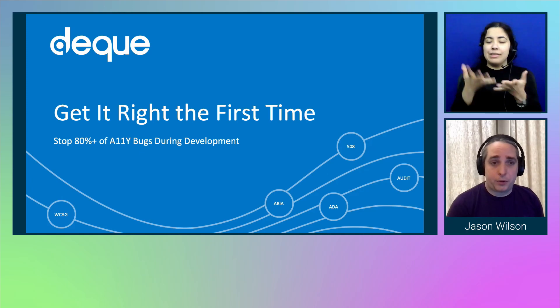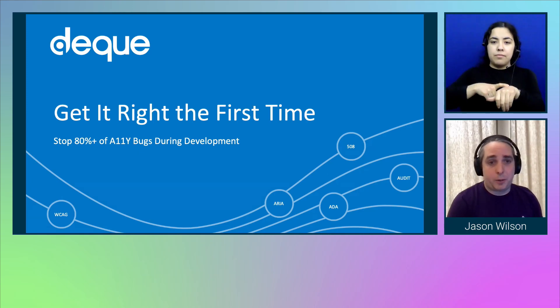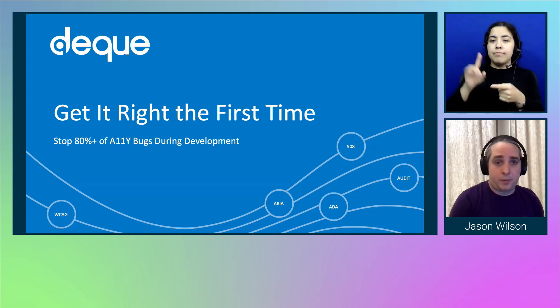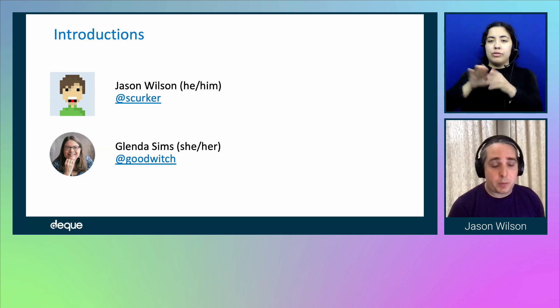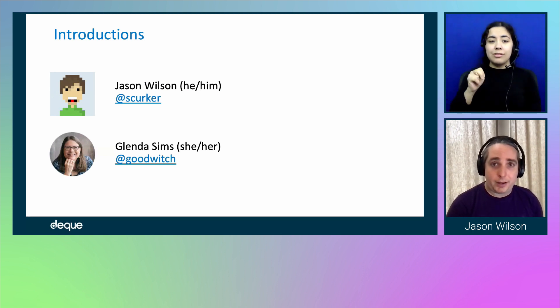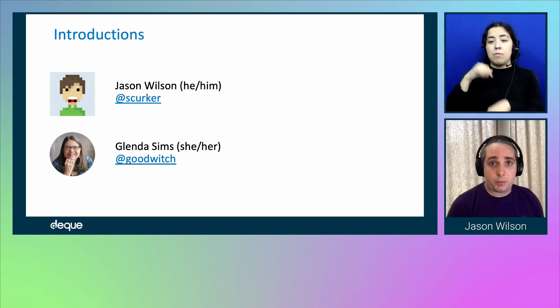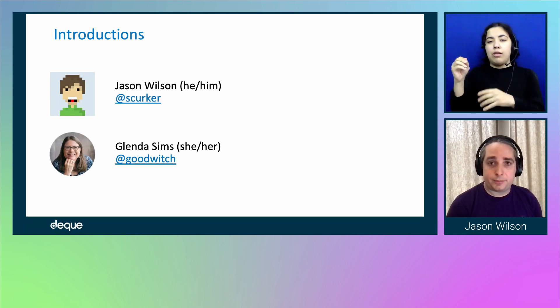This is a talk about getting it right the first time, stopping 80% of accessibility bugs during development. My name is Jason Wilson, I'm a developer at Deque Systems, my pronouns are he/him. I work on the Axe DevTools extensions and related tools, and I will let Glenda introduce herself.